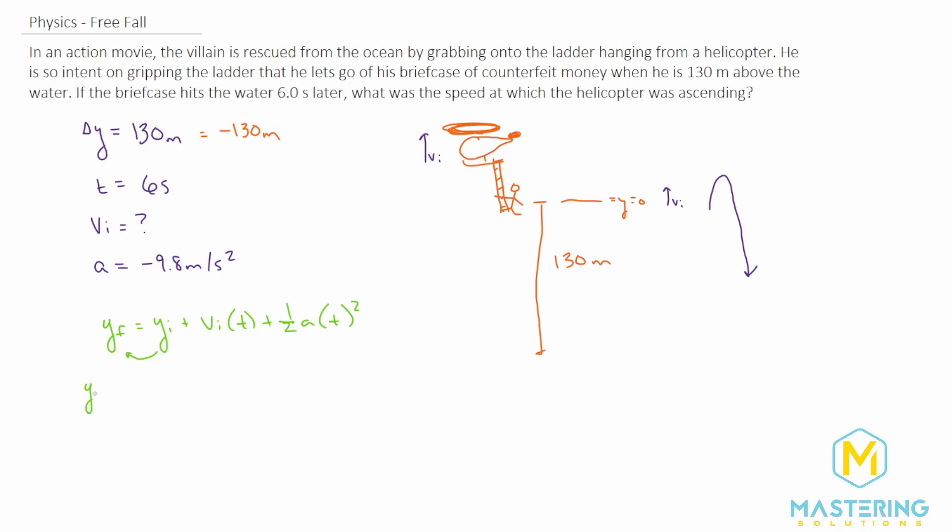What we're left with is Y final minus Y initial, but that's essentially just delta Y, right? That's why I'm leaving it here, because what we can do is leave this as delta Y equals velocity initial times time plus one half times the acceleration times time squared. We want to solve for the initial velocity though,